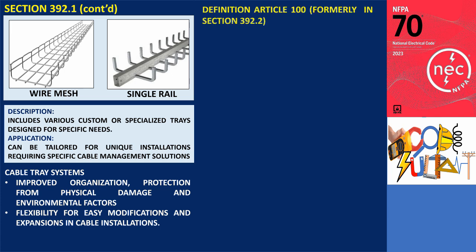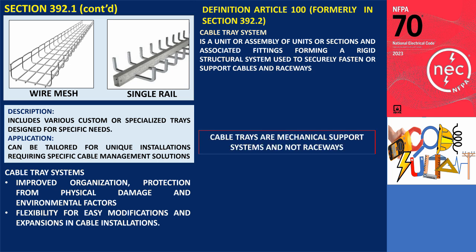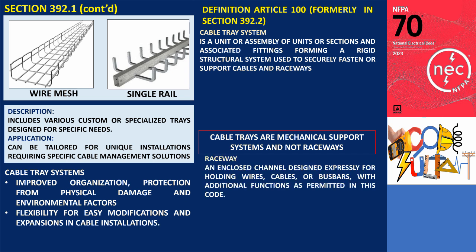The code defines a cable tray system as a unit or assembly of units or sections and associated fittings forming a rigid structural system used to securely fasten or support cables and raceways. This definition underscores the primary function of cable trays as mechanical support systems and not raceways. To further clarify this distinction, it's important to examine the definition of a raceway found in Article 100. A raceway is defined as an enclosed channel designed expressly for holding wires, cables, or busbars, with additional functions as permitted in this code.